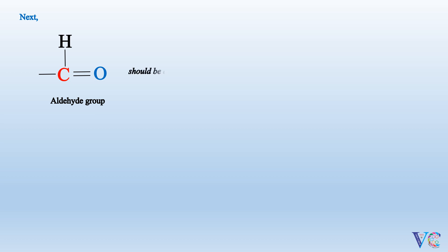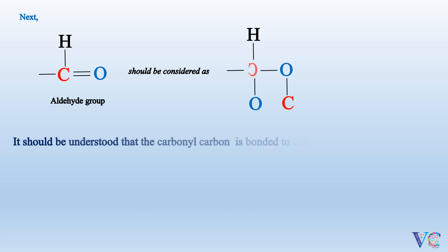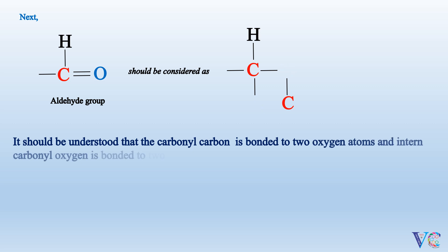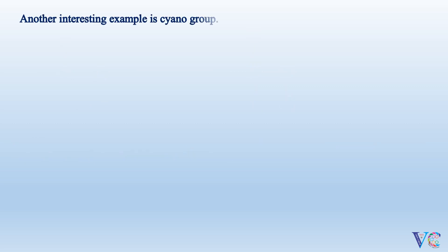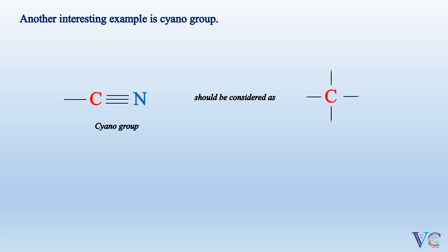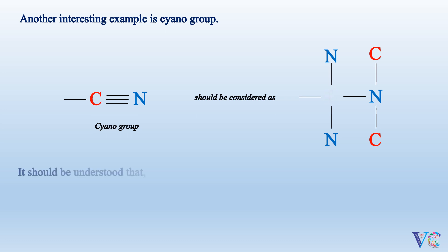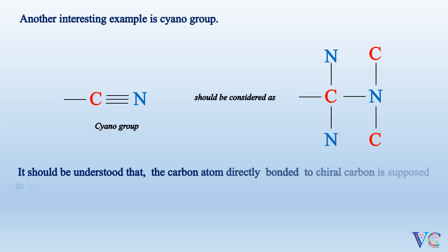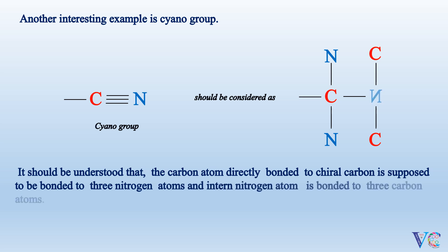Similarly, an aldehyde group should be considered such that the carbonyl carbon is bonded to two oxygen atoms, and in turn the carbonyl oxygen is bonded to two carbon atoms. Another interesting example is the cyano group: the carbon atom directly bonded to the chiral carbon is supposed to be bonded to three nitrogen atoms, and in turn the nitrogen atom is bonded to three carbon atoms.